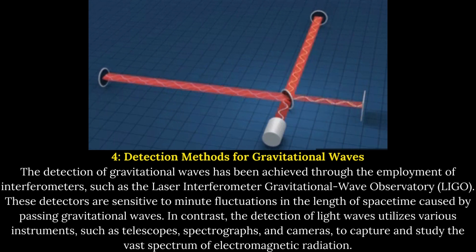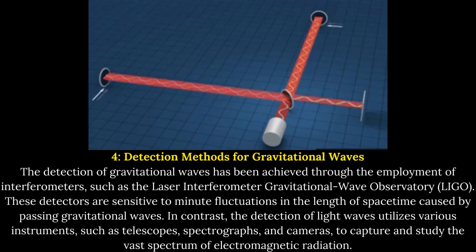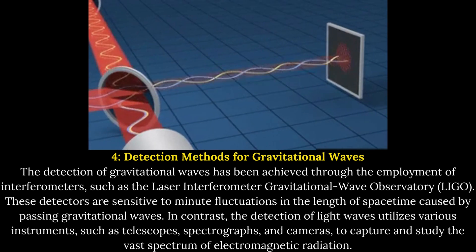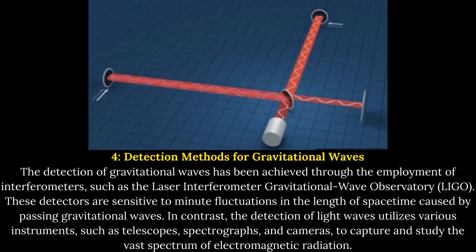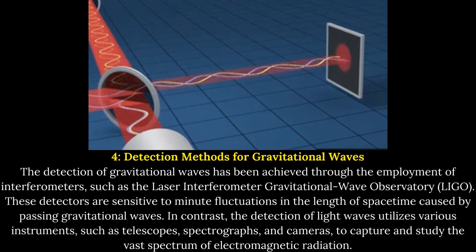Detection Methods for Gravitational Waves. The detection of gravitational waves has been achieved through the employment of interferometers, such as the Laser Interferometer Gravitational Wave Observatory, LIGO. These detectors are sensitive to minute fluctuations in the length of spacetime caused by passing gravitational waves.